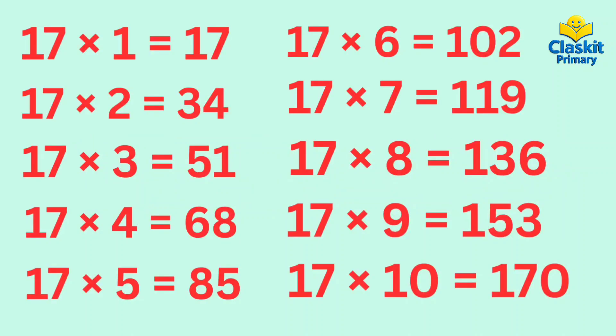Let's revise. 17 ones are 17. 17 twos are 34. 17 threes are 51. 17 fours are 68.